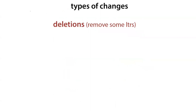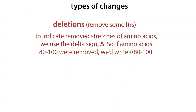Another type of change is a deletion, where we remove some of the letters. To indicate removed stretches of amino acids, we use delta notation — the capital Greek letter delta, which looks like a triangle — placed before the numbers of the amino acids removed. So if amino acids 80 to 100 were removed, we'd write delta 80 to 100.